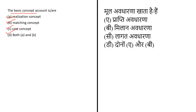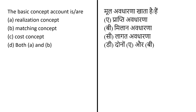The matching concept states that expenses related to revenue should be recognized in the same period in which the revenue was recognized, with no deferral of expense recognition into a later period. The cost concept states that all business assets should be recorded in the books of account at the price at which they were purchased, including the cost of acquisition and installation. So the correct answer is option D — all of the above.